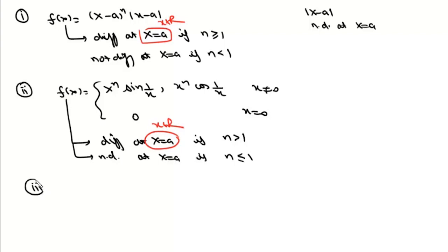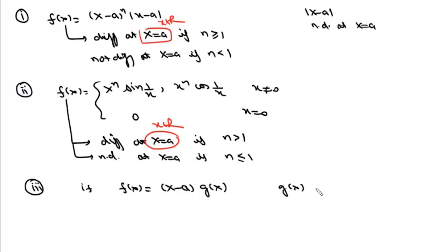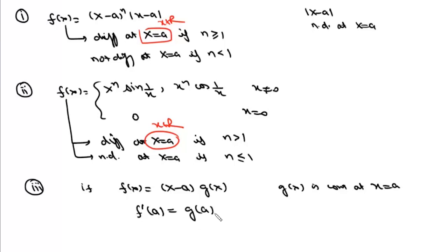The third result: if f(x) = (x - a) · g(x), and g(x) is continuous at x = a, then f(x) will be continuous at x = a, and f'(a) will simply be equal to g(a).